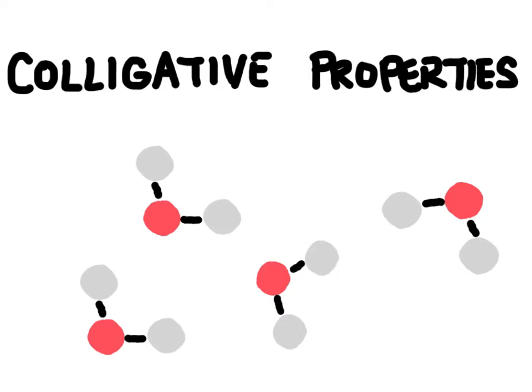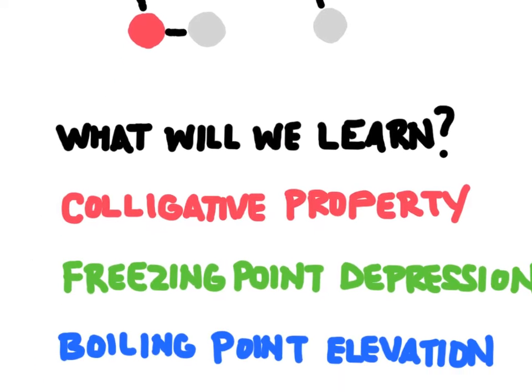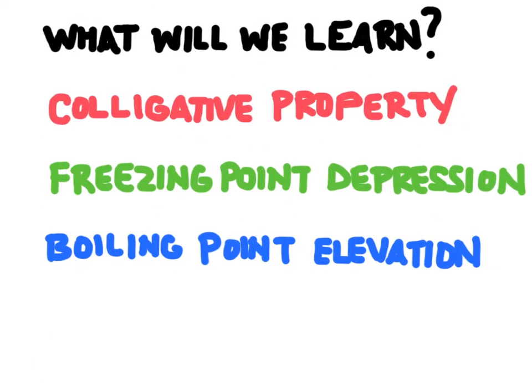In this video we're going to learn about colligative properties. First we'll learn the definition of colligative properties, then we're going to learn two specific colligative properties: freezing point depression and boiling point elevation.